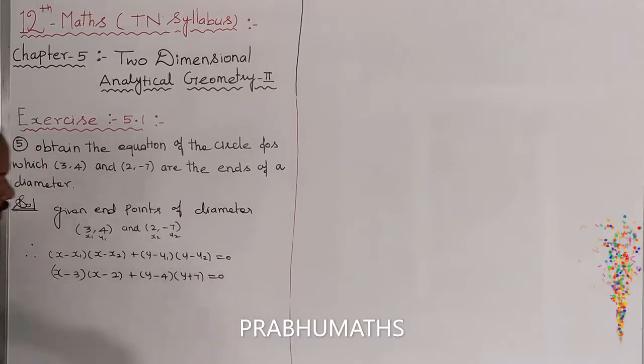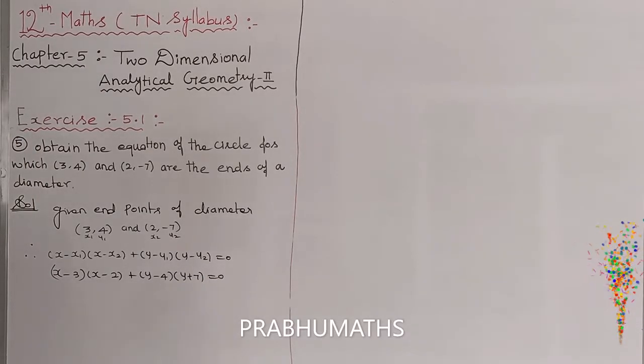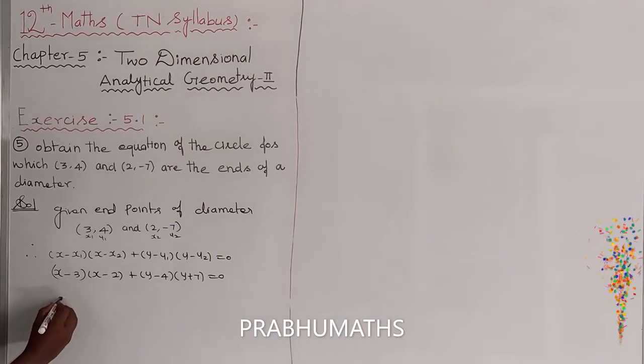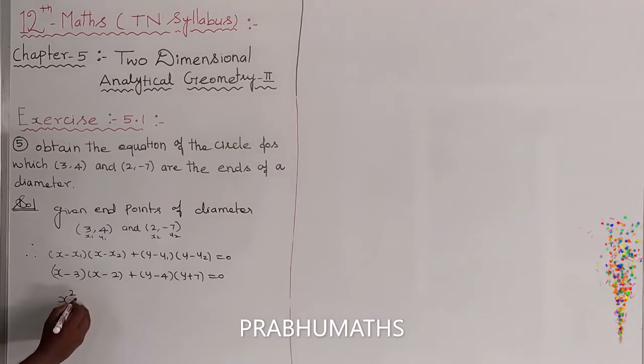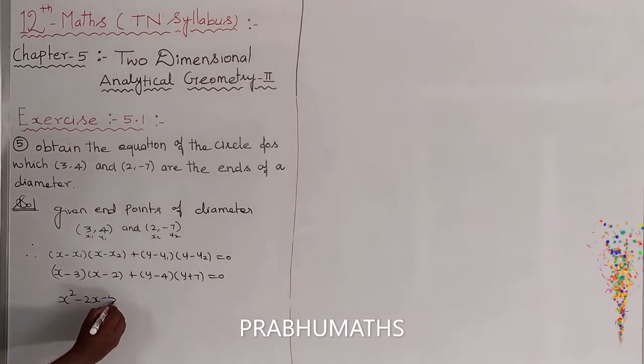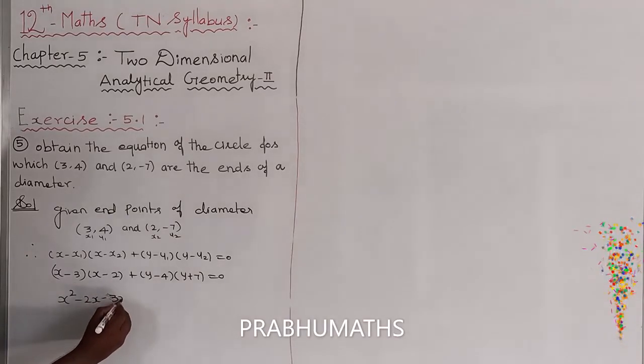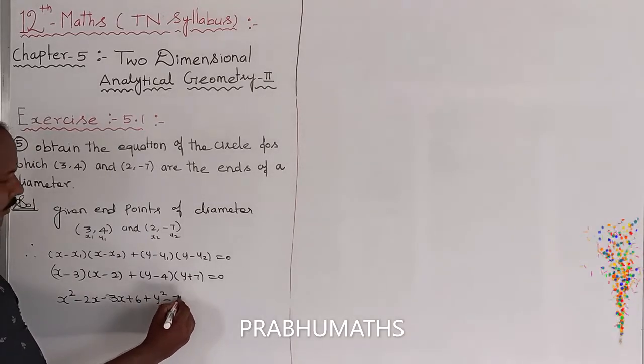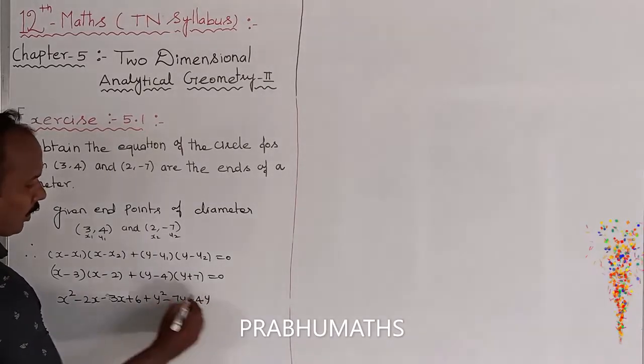This one, inside multiplication: first one, x square minus 2x minus 3x plus... next, x plus 2y square, next one plus 7y minus 4y.